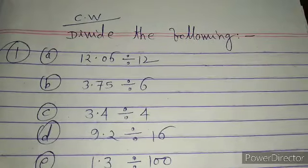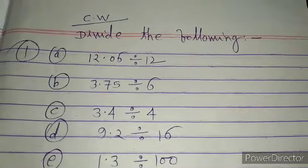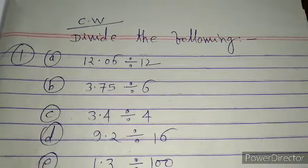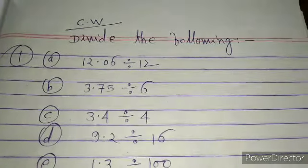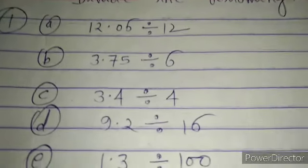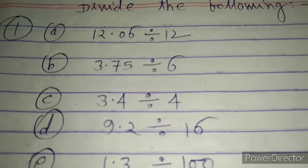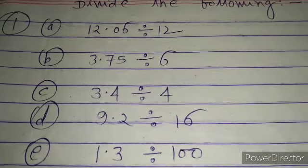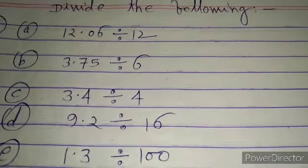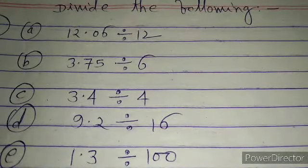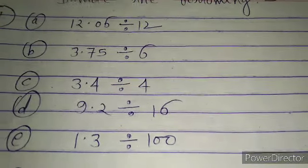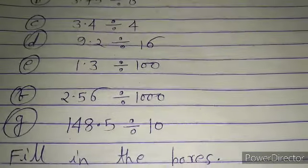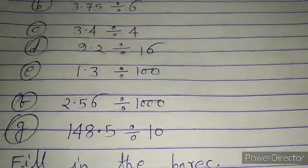Now I give you some classwork. Question 1: divide the following. A: 12.06 ÷ 12. B: 3.75 ÷ 6. C: 3.4 ÷ 4. D: 9.2 ÷ 16. E: 1.3 ÷ 100. F: 2.56 ÷ 1000. G: 148.5 ÷ 10.